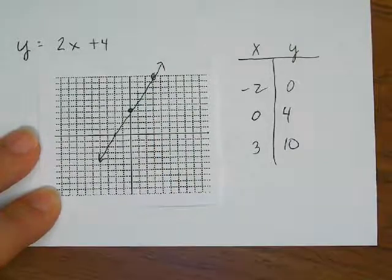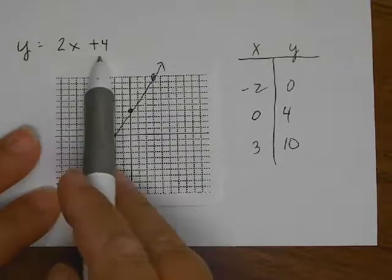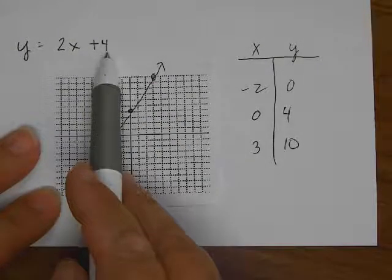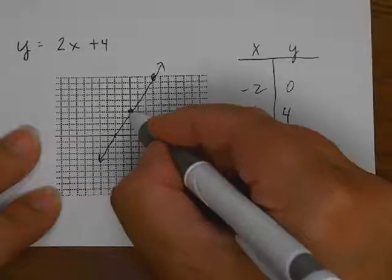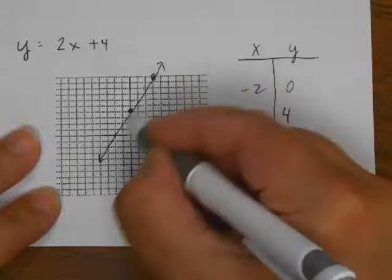So that's using an input-output table. Another way I could do this one is just by looking at it. This one's already in slope-intercept form, so I know the intercept is going to be 4. And then I can go up 2 over 1, up 2 over 1, up 2 over 1, and put some points.